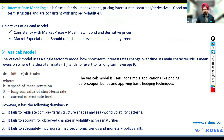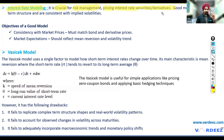Why do we do interest rate modeling? It is crucial for risk management — we have to model interest rates so that we can adjust our portfolios accordingly. Not only that, but also for pricing interest rate securities or any derivatives. For example, if you're getting into a swap contract, there's a fixed leg. How do you price those cash flows and get to that fixed leg number? We can use interest rate modeling to predict and find it. A good model explains the term structure and is consistent with the implied volatilities for the short term, medium term, and long term.